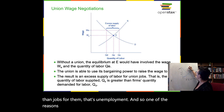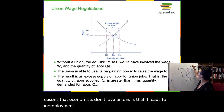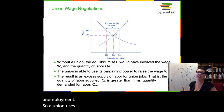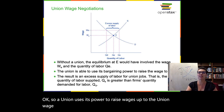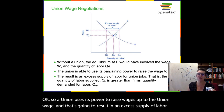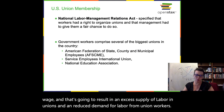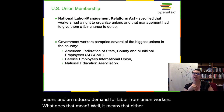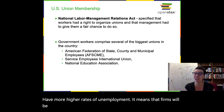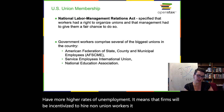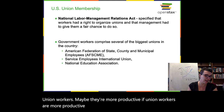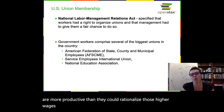A union uses its bargaining power to raise wages up to the union wage, resulting in an excess supply of labor and a reduced demand for labor from union workers. That means unions may have higher rates of unemployment, firms will be incentivized to hire non-union workers, and there's a question of whether union workers might be more productive — if so, they could rationalize those higher wages.